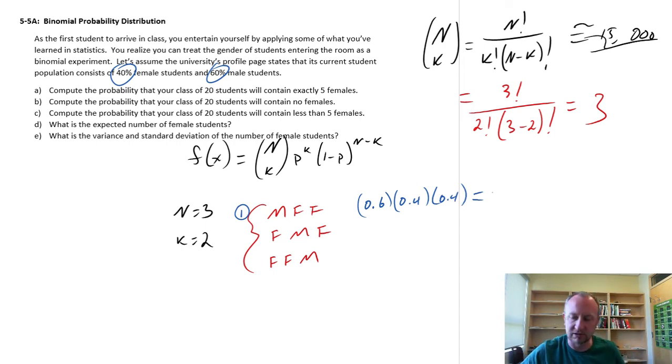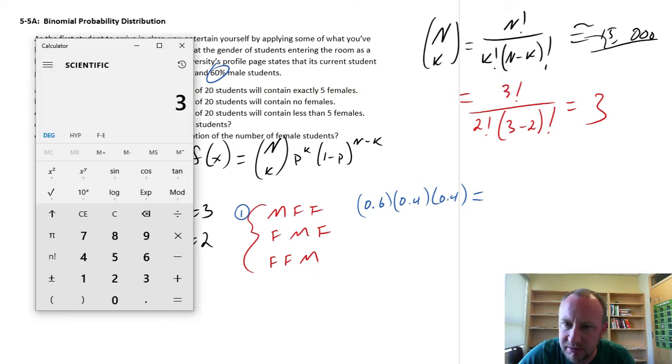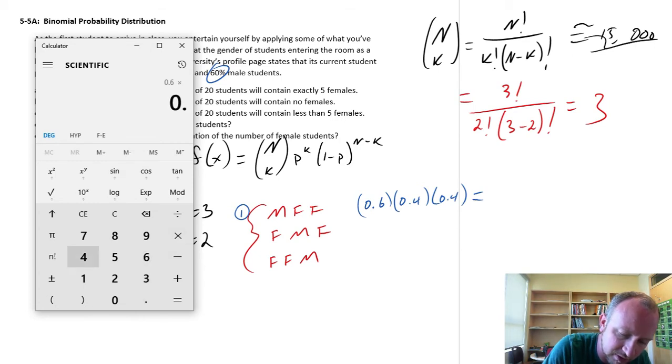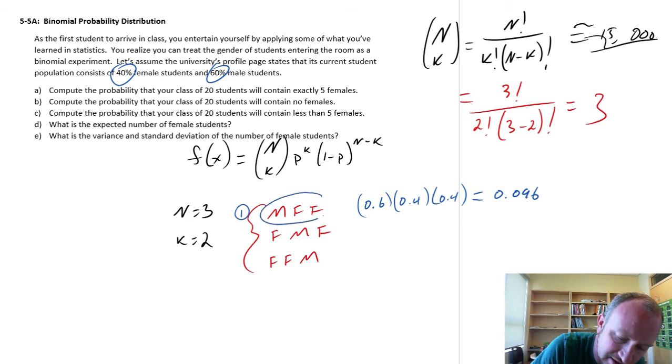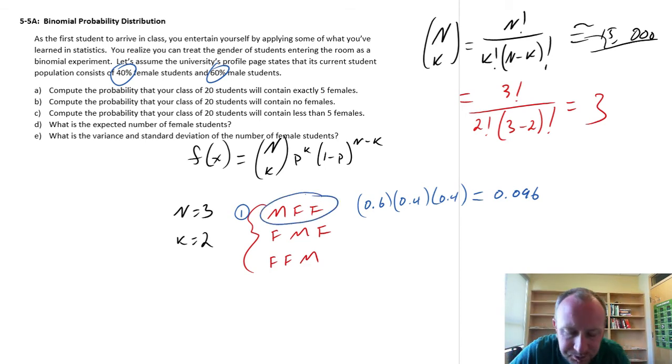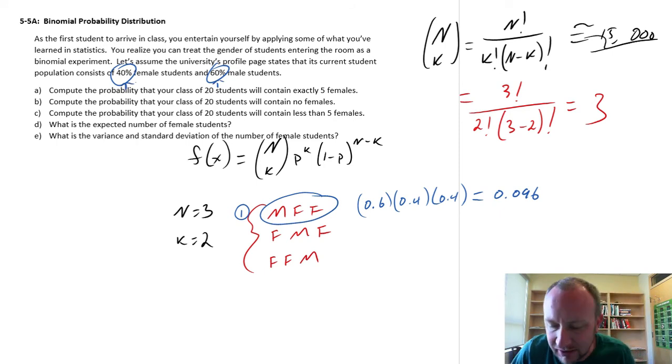So these are all mutually exclusive independent outcomes, so I can just multiply these probabilities together. And I see this is 0.6 times 0.4 times 0.4, so 0.096. So the probability of achieving this experimental outcome given these probabilities is 0.096.